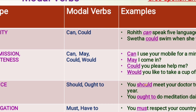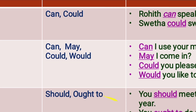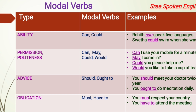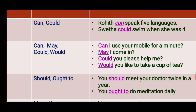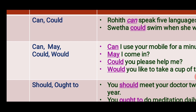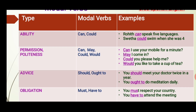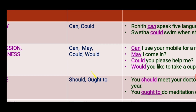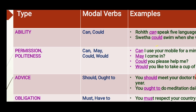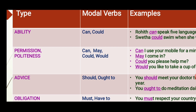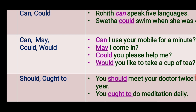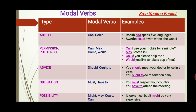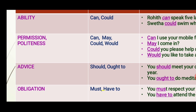The second type is permission and politeness. 'Can', 'may', 'could', and 'would' refer to permission and politeness. Examples: Can I use your mobile for a minute? May I come in? Could you please help me? Would you like to take a cup of tea? 'Can' and 'may' express permission, while 'could' and 'would' give more politeness to your language.